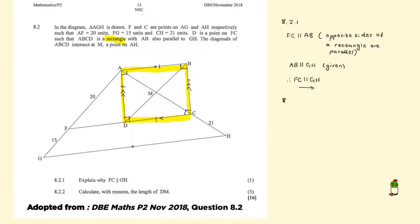Second question 8.2.2 says calculate with reasons the length of DM. So DM is this length over here. But what we have now is our theorem again that we are busy investigating. FC is parallel to GH.